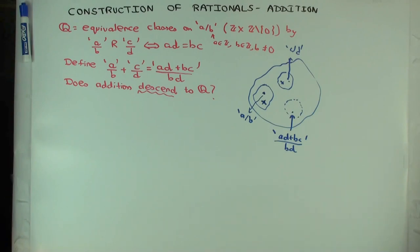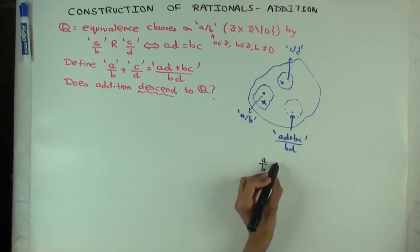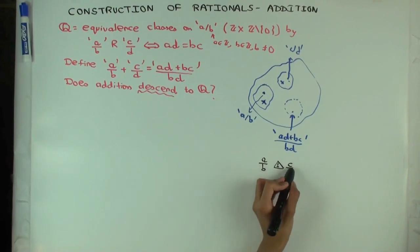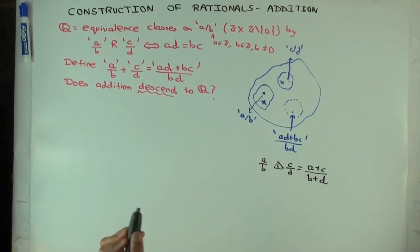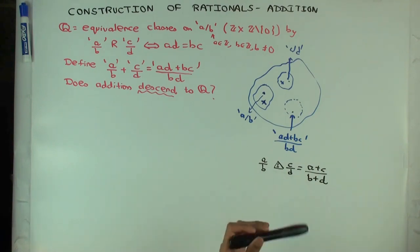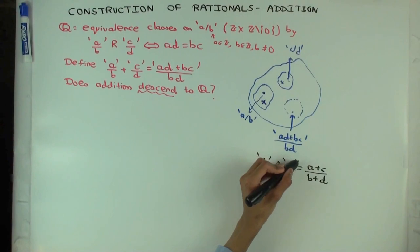For example, I'll give you another operation which isn't well defined. You call it this. This looks pretty cool, right? I just add the numerators and add the denominators. But this is not well defined at the level of rational numbers. You can obviously define it clearly at the level of actual pairs.